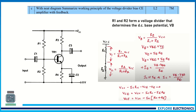The next question: with diagram, summarize the working principle of voltage divider bias for common emitter configuration amplifier with feedback. This question is focused on voltage divider bias applied to the common emitter amplifier circuit. First explain how the voltage divider works: if you have Vcc and two resistors R1 and R2, the output voltage V1 across R1 equals R1/(R1+R2) × Vcc, and similarly for R2.